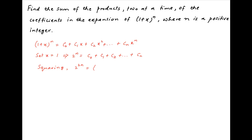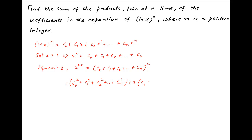Now take the square of both sides: we get 2^(2n) equal to the square of (C0 + C1 + C2 + ... + Cn). This expands to C0² + C1² + C2² + ... + Cn² plus two times the sum of the products of the coefficients taken two at a time.